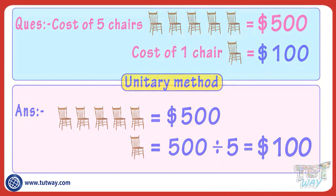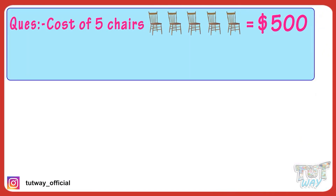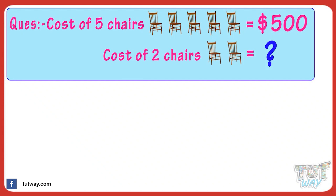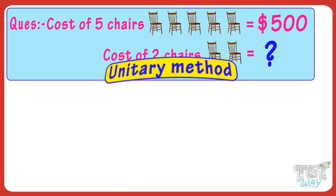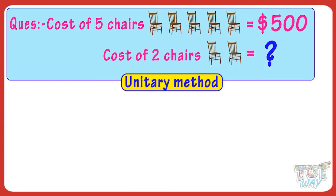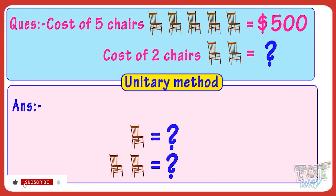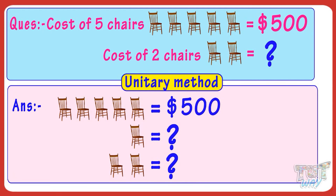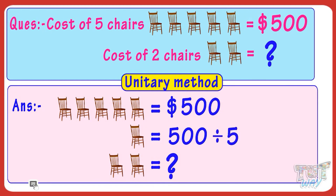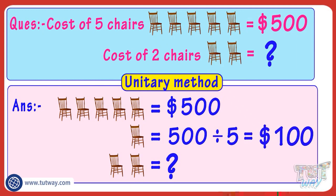Now let's take another example. The cost of five chairs is $500. Then what is the cost of two chairs? Let's find it out with the help of unitary method — we will first find the cost of one chair and then find the cost of two chairs. If the cost of five chairs is $500, then cost of one chair is $500 divided by five, which equals $100.